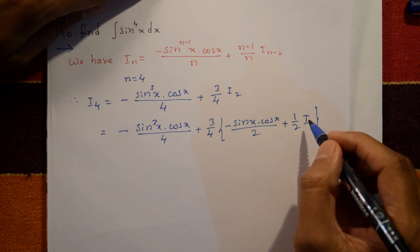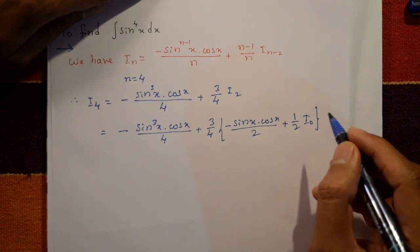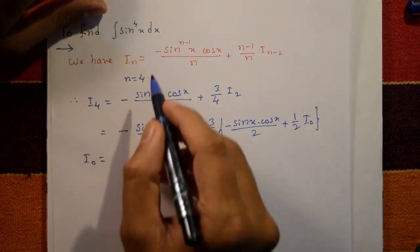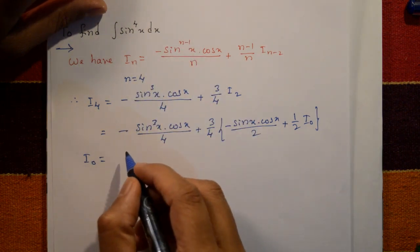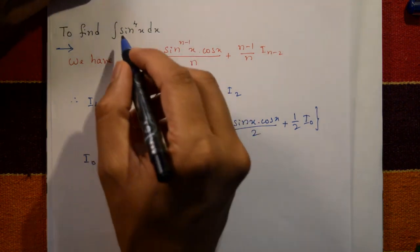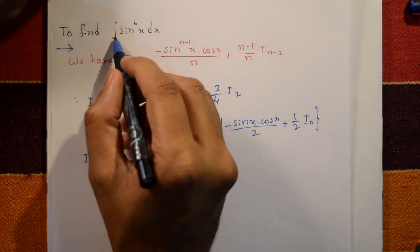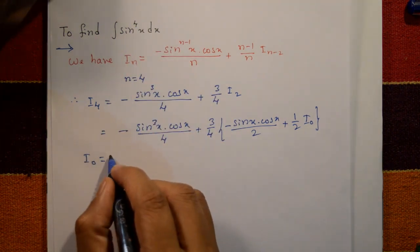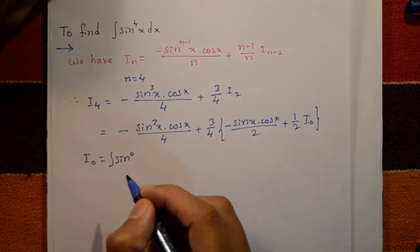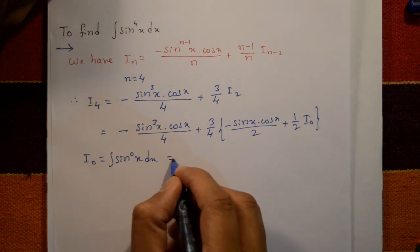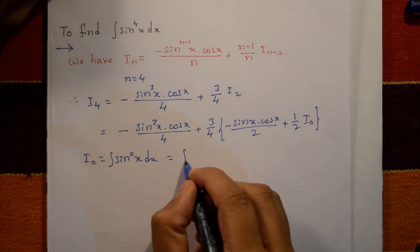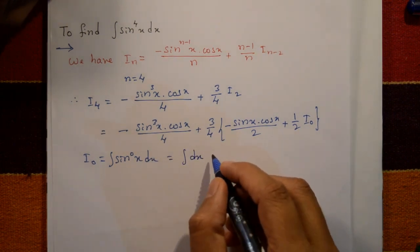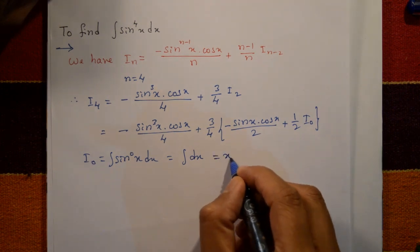Now find I₀. With n = 0, I₀ is the integration of sin⁰x dx, which is the integration of 1 dx. So I₀ = x.